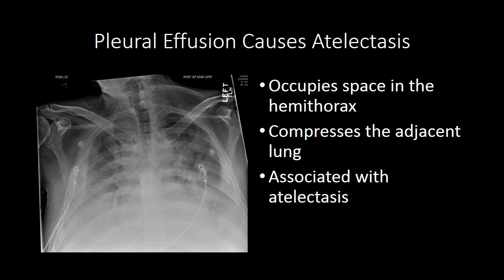Pleural effusion is a very common reason to have atelectasis, and there is almost always atelectasis in the setting of a pleural effusion. The pleural effusion occupies space within the hemithorax, which is relatively fixed, compressing the adjacent lung. In this case, we see the meniscal sign with the space along the pleura thickened by fluid, and underlying those effusions are very dense opacities that are really a combination of the effusion and the atelectasis.